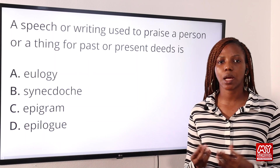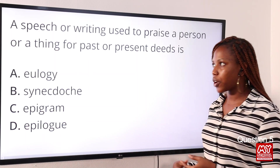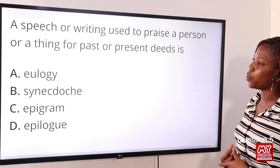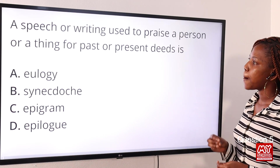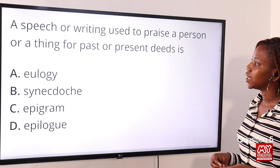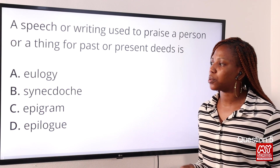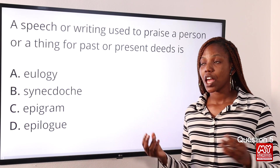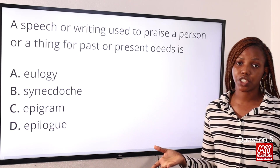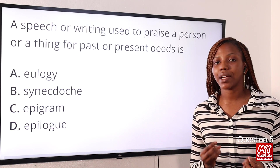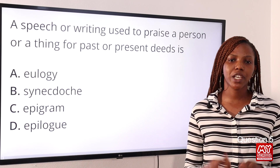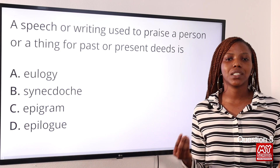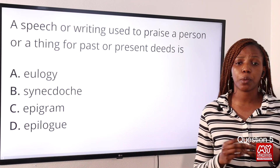Question five: a speech or writing used to praise a person or thing for past or present deeds is Option A: eulogy, Option B: synecdoche, Option C: epigram, Option D: epilogue. The answer is eulogy — a writing or speech that praises someone or something, especially a tribute to someone who has died. The answer is Option A.